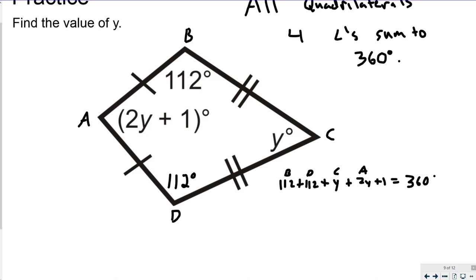So I can just do some simple equation solving. 112 plus 112 would be 224. And then Y and 2Y is 3Y. And the 224, I'm just going to go ahead and add in this additional one over here to make it 225 plus 3Y equals 360.